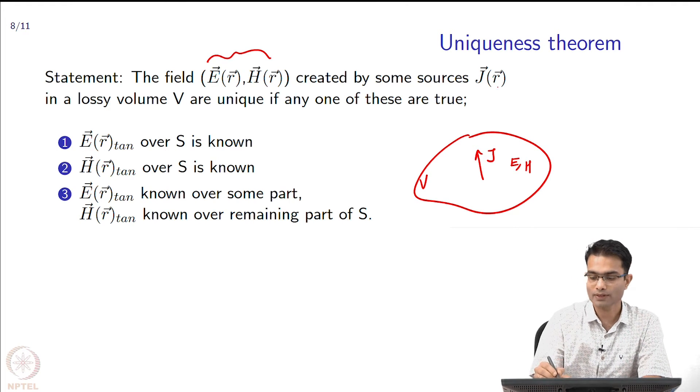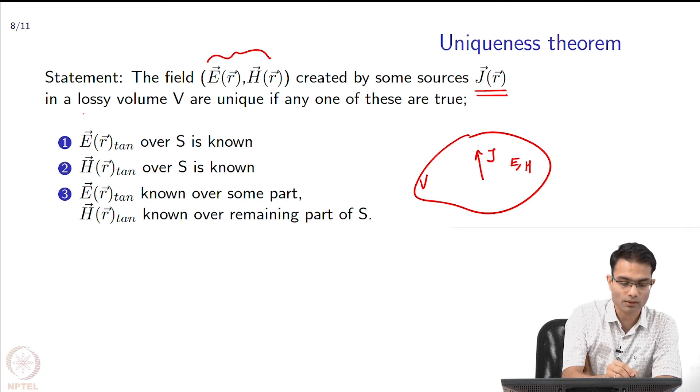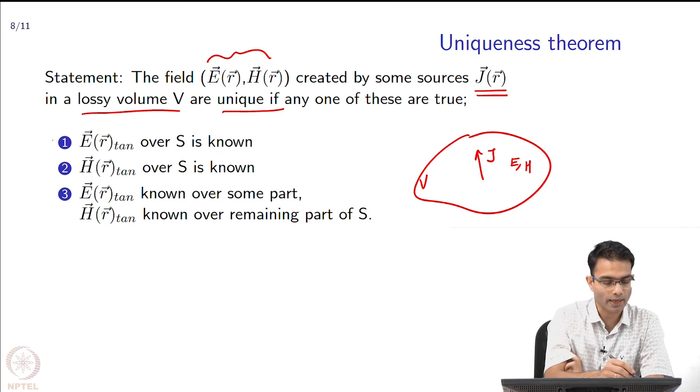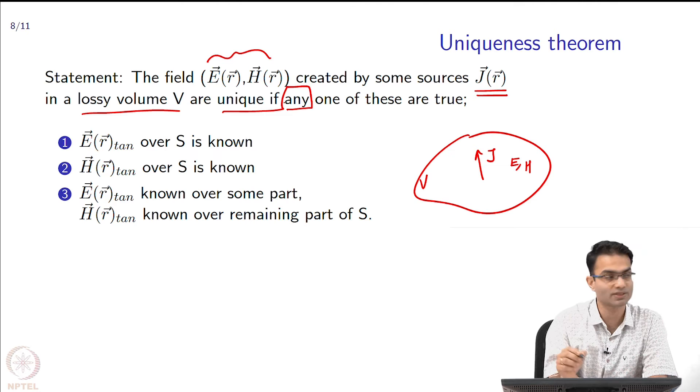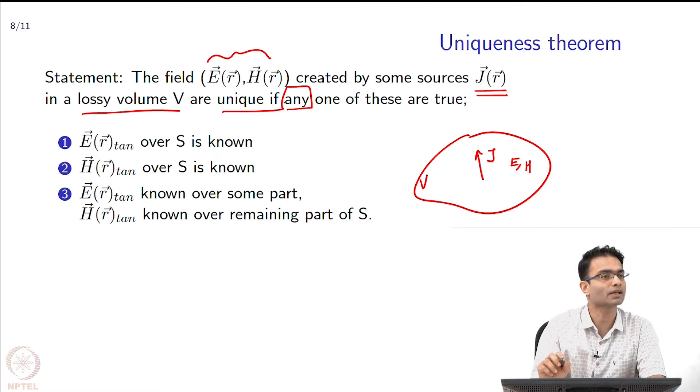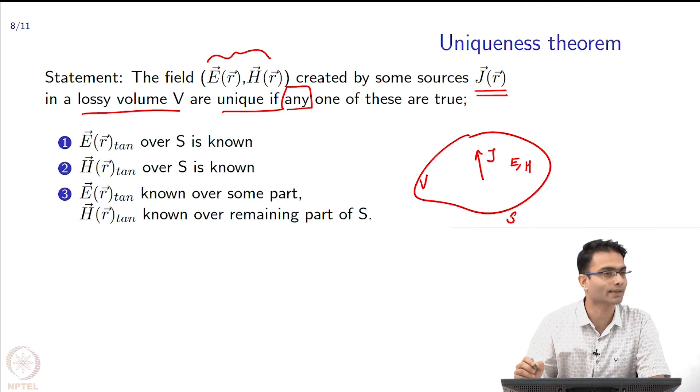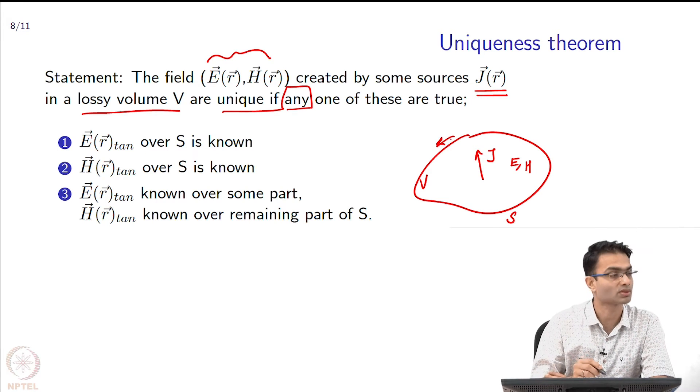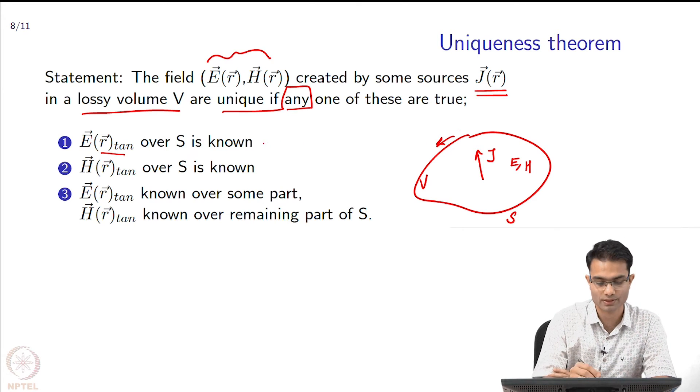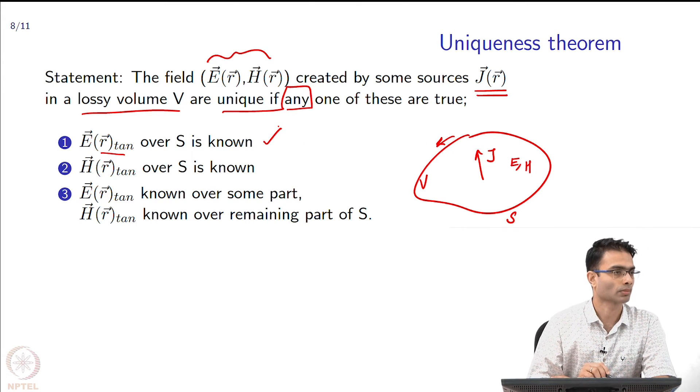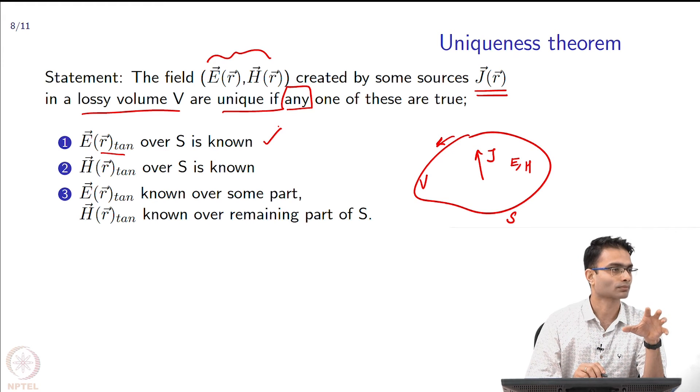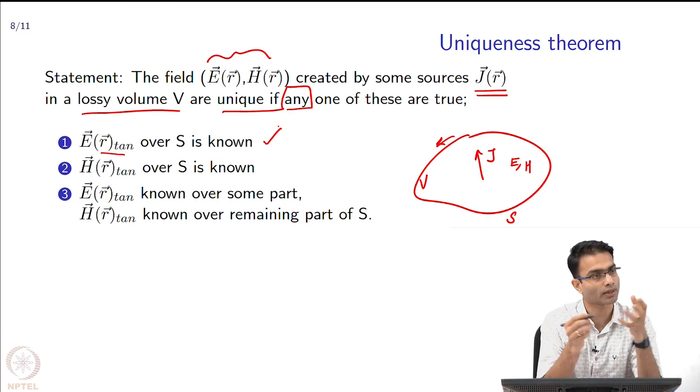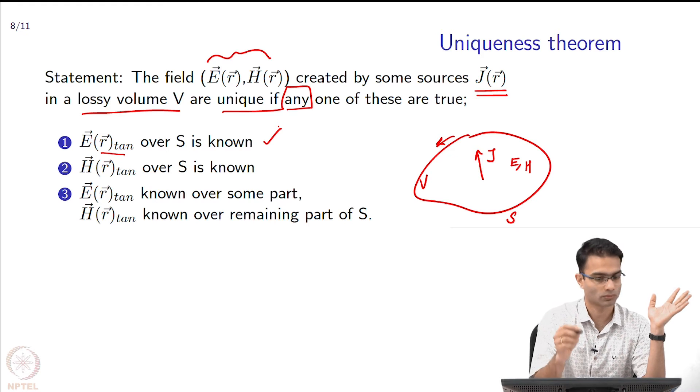What is the theorem saying? That if I take a source J inside a lossy volume V, then the fields are unique under any of these three conditions. It is not all, it is any of these three conditions. What are these three conditions? This volume has some surface S. This is saying that E tangential over this surface, supposing I know E tangential over all of S, if that is specified then whatever you get as the result of a calculation the fields they are unique, there is no other solution that is correct.